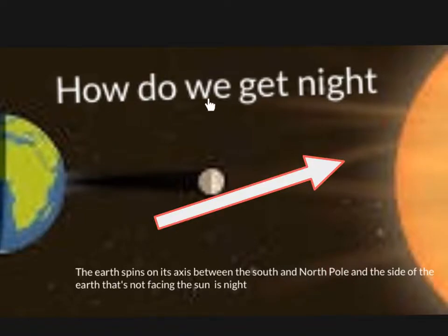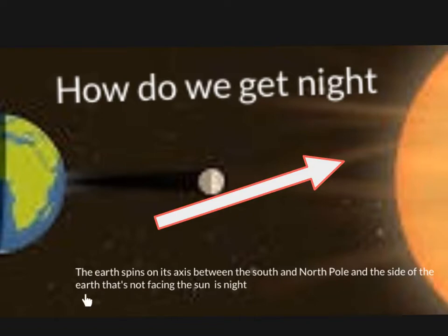How do we get night? The Earth spins on its axis between the South and North Pole. The side that's not facing the Sun is night.